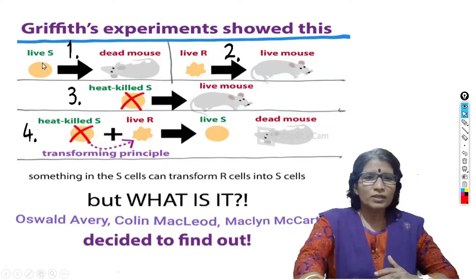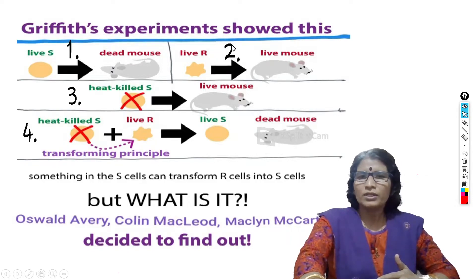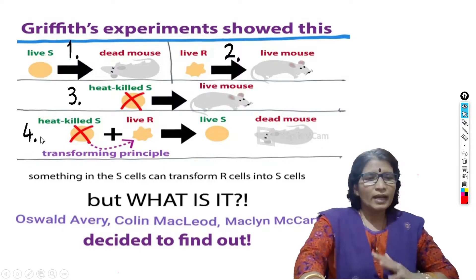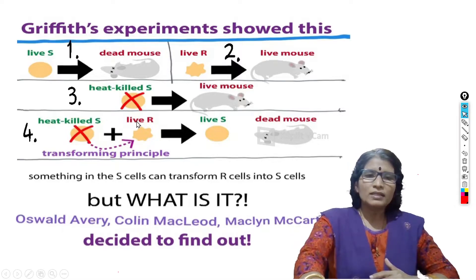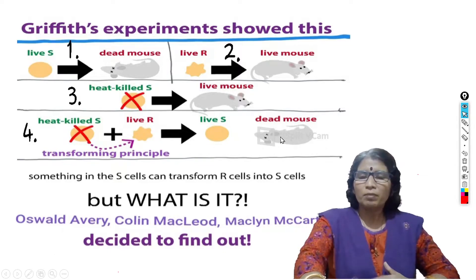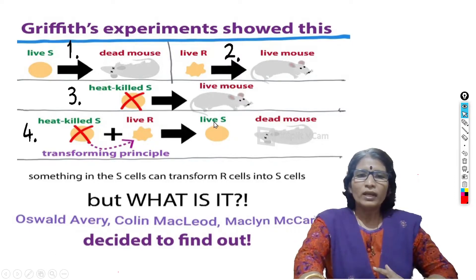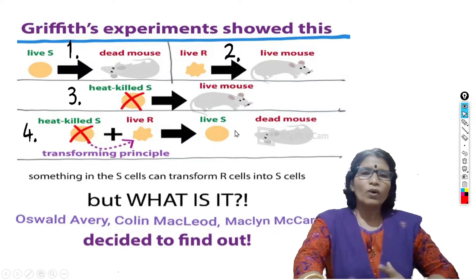To summarize the four experiments: living smooth cells injected — mouse died; living R cells injected — mouse lived; heat-killed smooth cells injected — mouse lived. In the fourth experiment, both heat-killed smooth cells and live R cells were injected at the same time, the mouse got infected by pneumonia and died, and surprisingly, scientists isolated living smooth cells from the dead mouse.